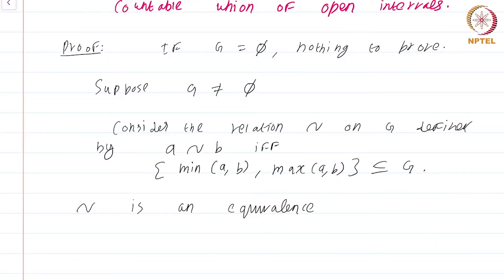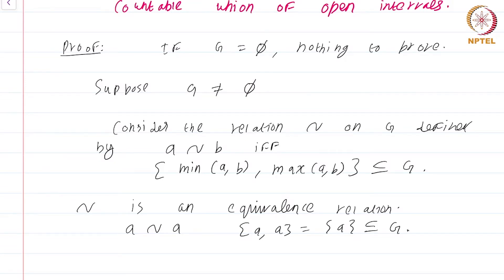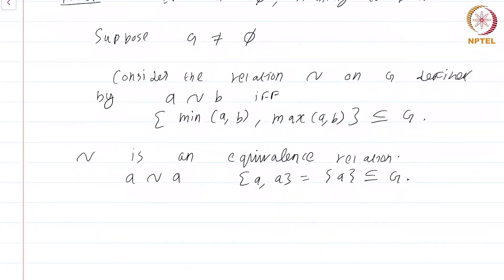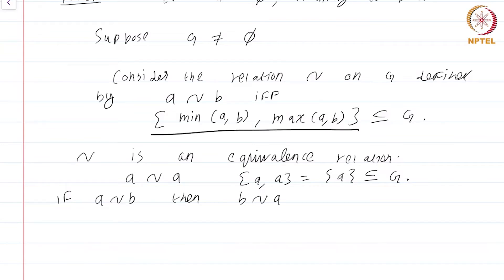How do we show this? A is clearly related to A because the closed interval [A, A] is just the singleton set {A}, which is obviously going to be a subset of G. So reflexivity is obvious. Similarly, if A is related to B, then obviously B is related to A, because [min(A,B), max(A,B)] is the same either way.